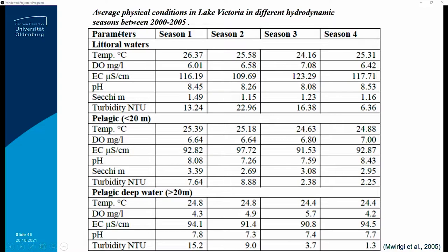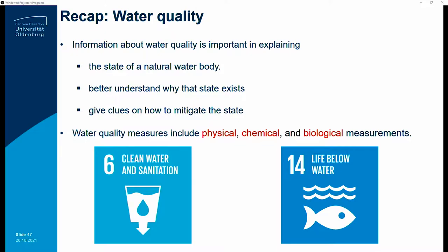Similar to what we discussed, this campaign looked at different but slightly similar parameters — Secchi disc depth measurements and temperature. These are parameters you can measure, and if you continue measuring them you build a time series. Water quality information is very important in explaining the state of a natural water body and helps you understand why that state exists. If you measure things over time, you start to notice correlations — for example, if temperature goes down, a certain algal species may appear or certain fish may die.